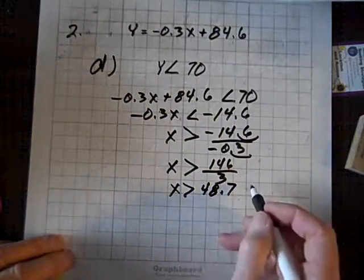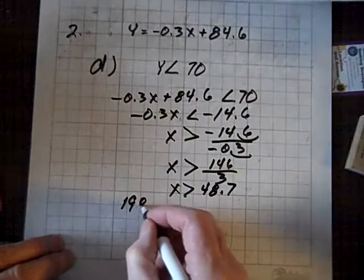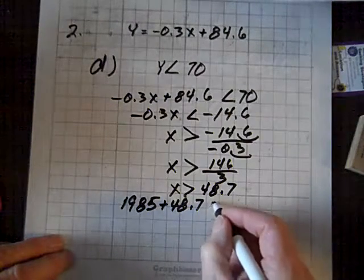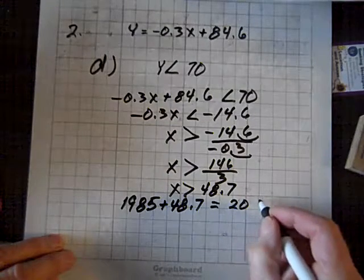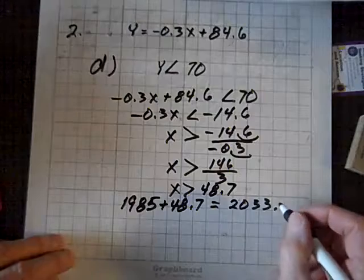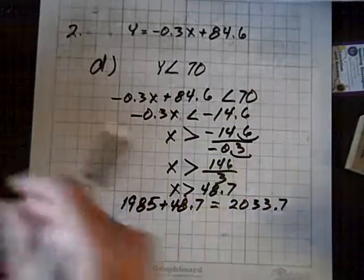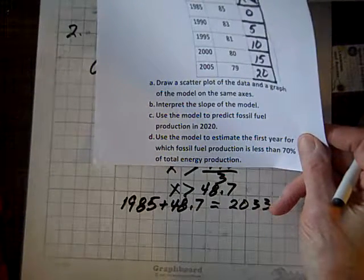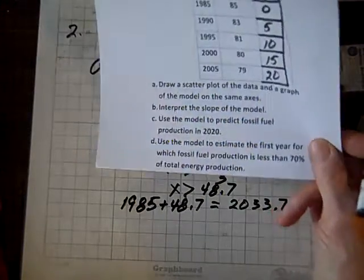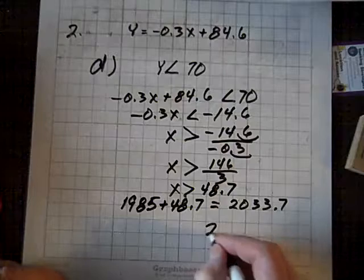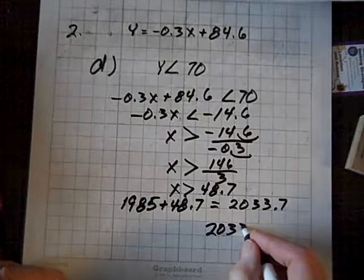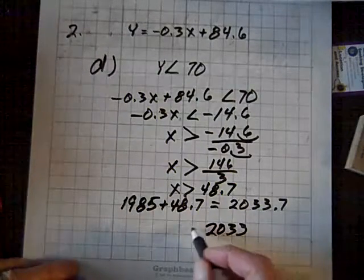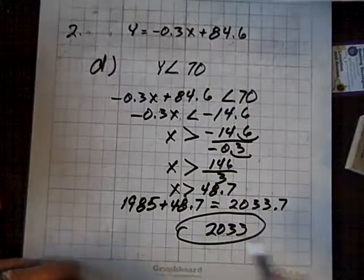So, the year then will be adding 48.7 to 1985 plus 48.7 equals 2033.7. That means, and now let's read this question again. It says, estimate the first year for which the fossil fuel production is less than 70%. Well, in 2033, that fuel production percentage for fossil fuels will be less than 70%, and we are done.